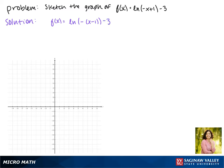So we'll start graphing this by looking at the parent function f of x equals the natural log of x. Notice that it passes through the point 1, 0.